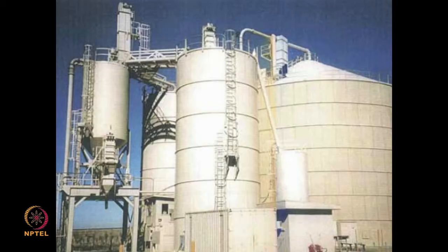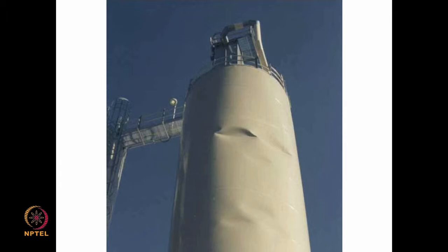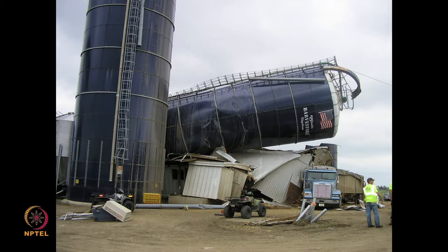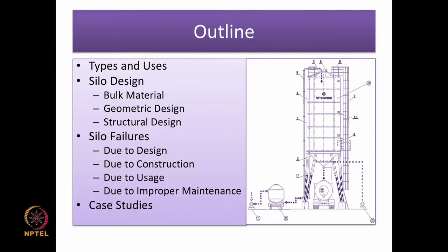Let us talk about silos and silo failures. In industrial silos you can see hints of problems — for example, a dimple developing on the outer wall, or the entire structure toppling over. Silo design is quite critical. You have to design for the material you are storing — there is a geometric design but also a structural design. The structural integrity must be maintained for various types of storage conditions, taking time effects into account as well. Failures can happen due to flaws in design, flaws in construction, flaws in usage, and flaws in maintenance.